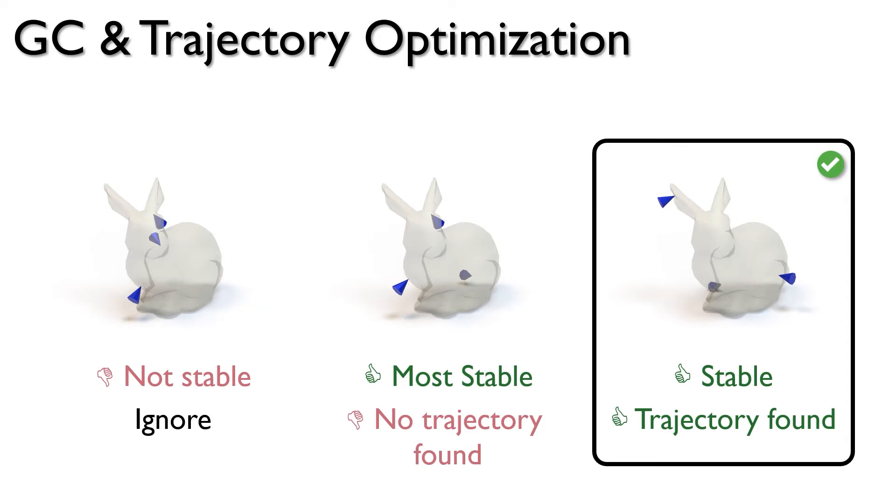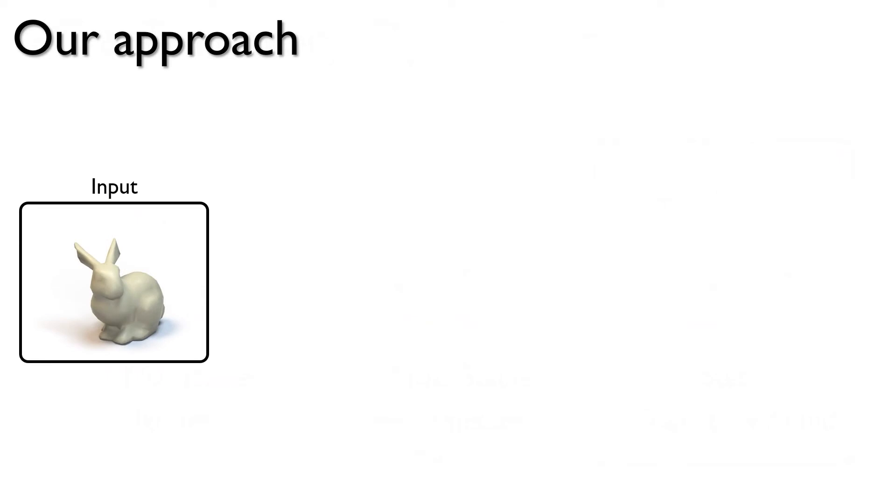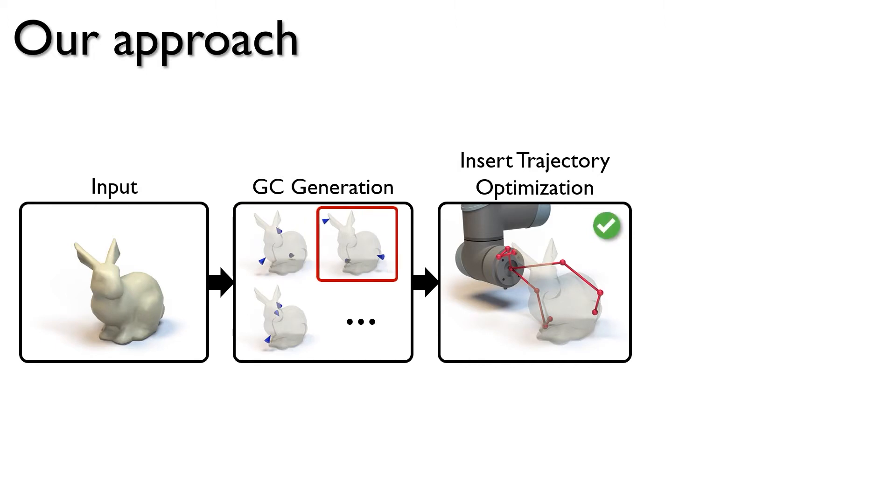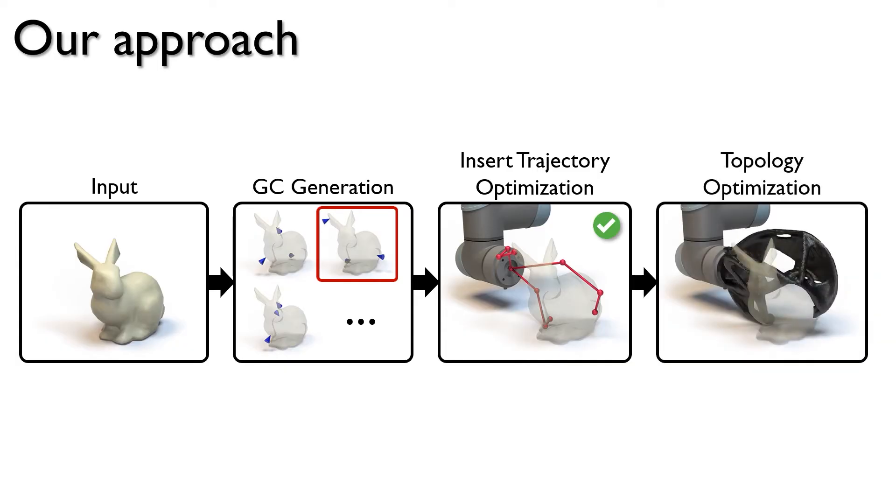Our approach is therefore as follows. Given an input object and its positioning relative to the robot arm, our first step generates a list of stable GC candidates and ranks them based on the metrics we care about. Our second step takes the best ranked GC and co-optimizes the insert trajectory and the gripper design abstraction to avoid collision. If the algorithm could not find a valid insert trajectory, it would try the next GC candidate on the list. To improve the sturdiness of the gripper and save materials, our last step runs topology optimization to generate the final gripper design.